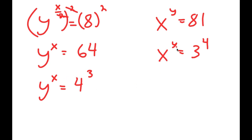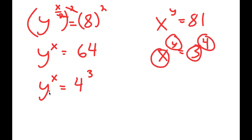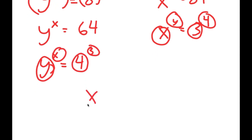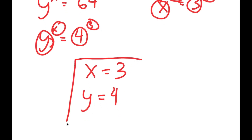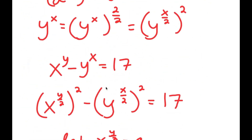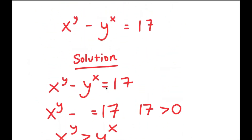So I have x to the power of y equals 3 to the power of 4, and y to the power of x equals 4 to the power of 3. Matching bases and exponents, x equals 3 and y equals 4. So this is my solution to this equation.